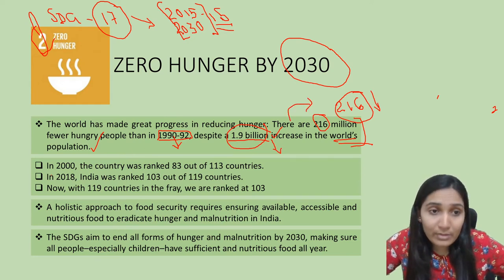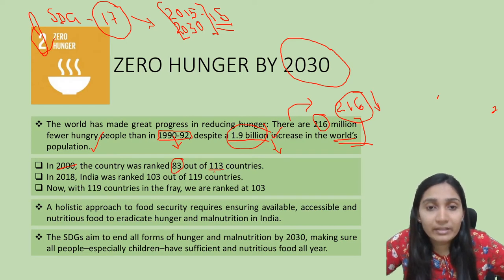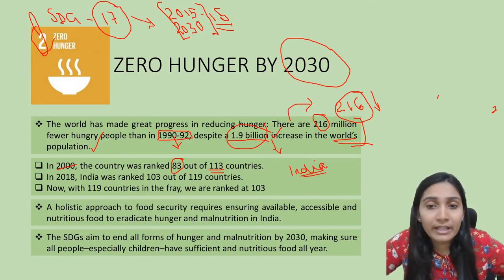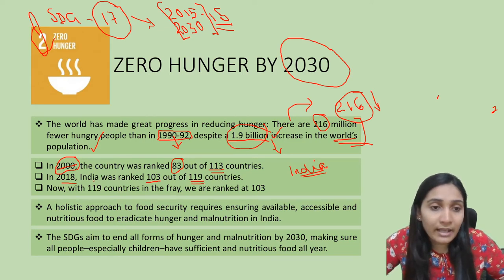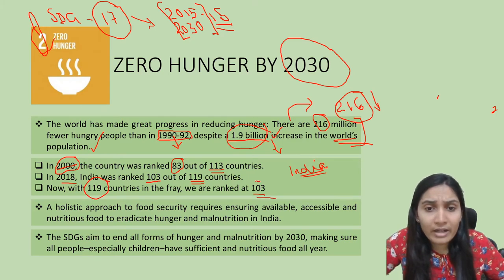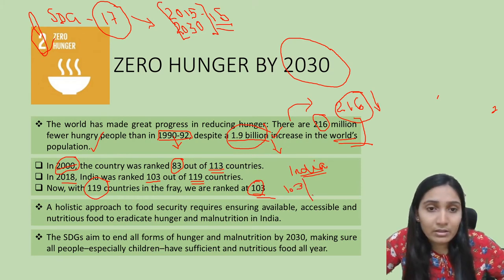In the year 2000, India was ranked 83 out of 113 countries on the hunger index. Whereas in 2018, India was ranked 103 out of 119 countries. So India's rank is 103 out of 119 countries as of 2018.